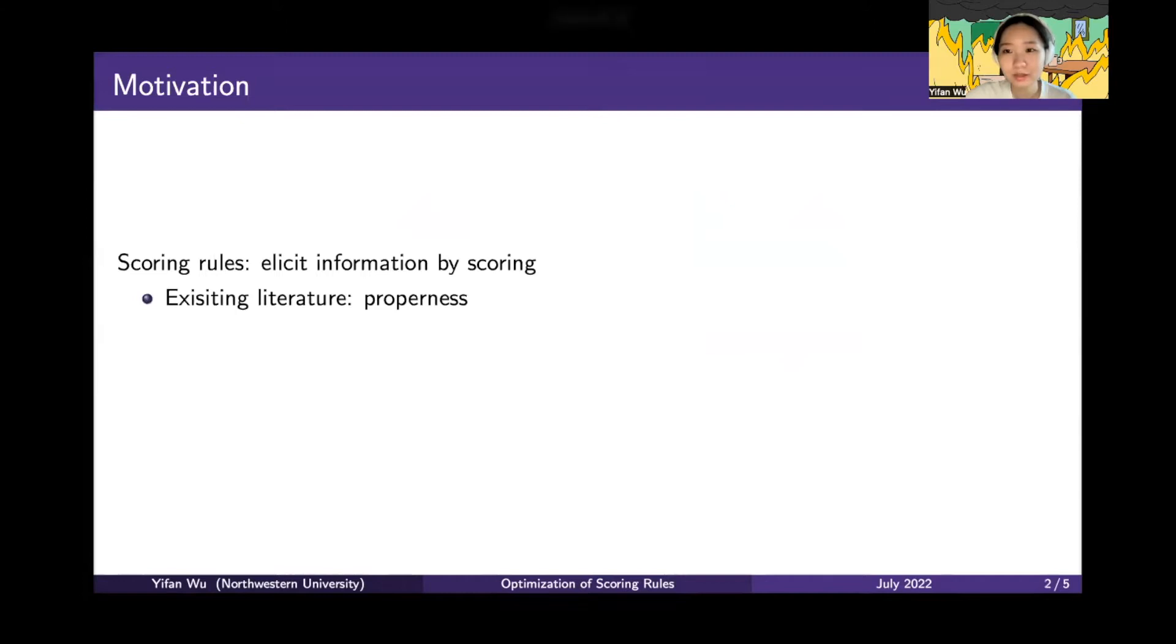Scoring rules are used to elicit information from a strategic agent by giving a score. The existing literature mainly focuses on characterizing proper scoring rules, which means to incentivize the agent to report their belief distribution truthfully. In our paper, we consider the problem of using a proper scoring rule to incentivize effort from the agent. This is a problem of optimization of scoring rules.